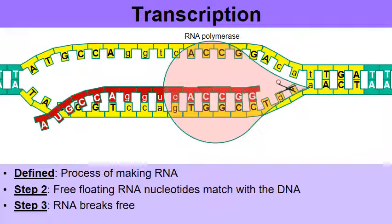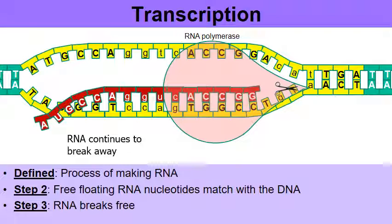Another G floats in. So we're performing transcription. We're making RNA. And eventually, the RNA, the reddish-brownish RNA, is going to continue to break away. The RNA is going to continue to break away.